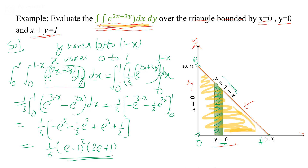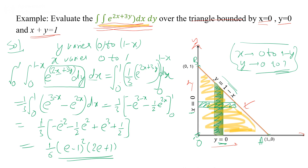In that case we were taking the strip along the y-axis. If we wish to take the strip along the x-axis, then x varies from 0 to 1 minus y, and y varies from 0 to 1. You can also take this limit depending on the order of integration — in that case you integrate first with respect to x, then y.